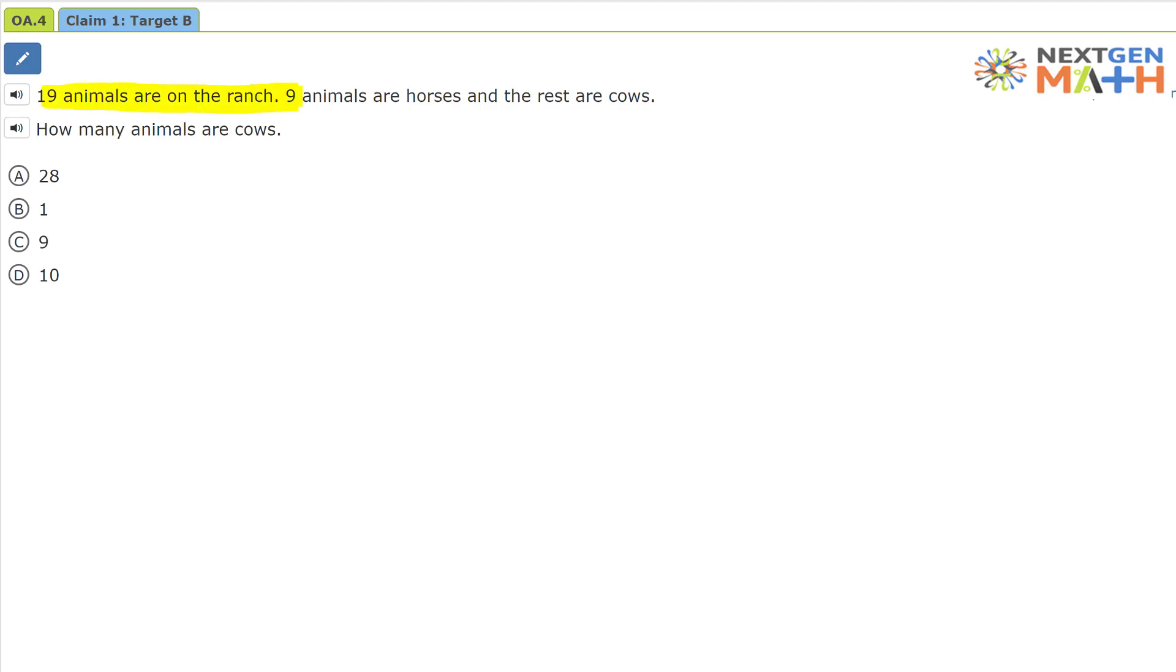Nineteen animals are on the ranch. Nine animals are horses and the rest are cows. How many are cows?